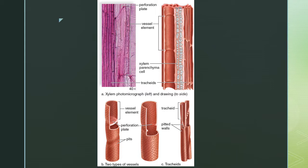Vessel elements and tracheids make up the main transport pathway for water and minerals. Vessel elements have perforated plates allowing water flow and pits for lateral flow. Tracheids are smaller, with pitted walls that allow water to move up. Together with parenchyma cells, these make up the xylem.